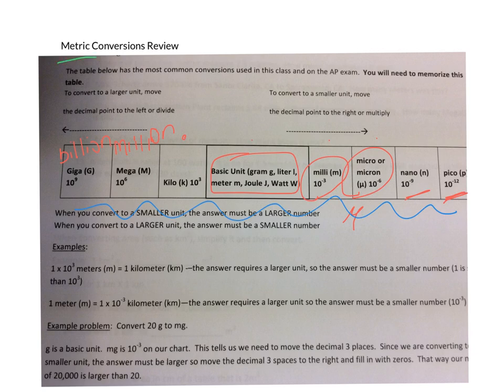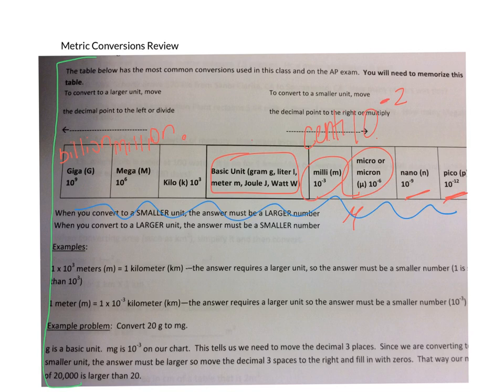Before we go on, take a minute and read through how to solve metric conversions, and then we'll go on to problem number one. One more thing I forgot to add to this chart: very rarely, but you see it sometimes, you have centi, and centi is 10 to the negative 2. So you should add that here. If you have worked with a meter stick, you'll know that there are 100 centimeters in a meter, and on occasion you will find centi.